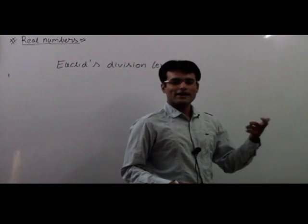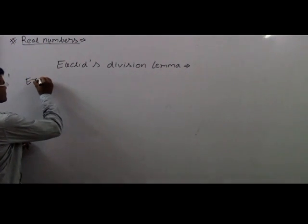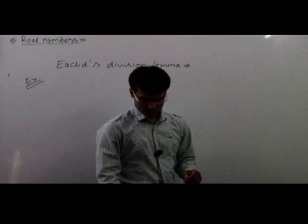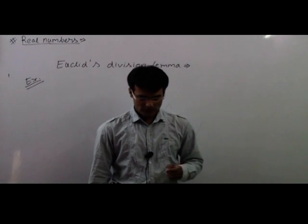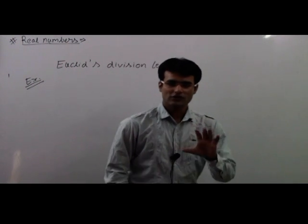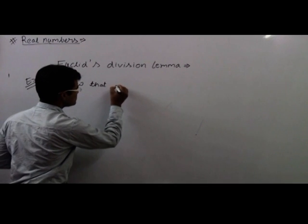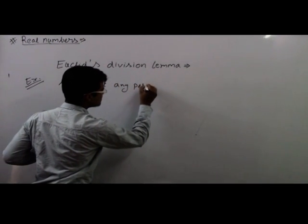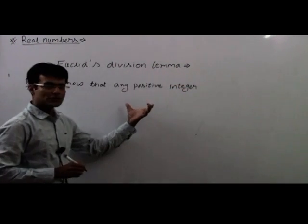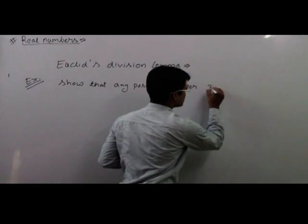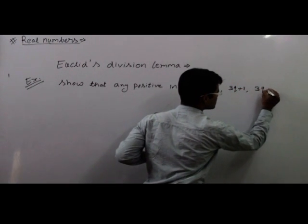What about the logics of arithmetic? In the first example, we see that: show that any positive integer is of the form 3Q, 3Q plus 1, and 3Q plus 2, for some integer Q.